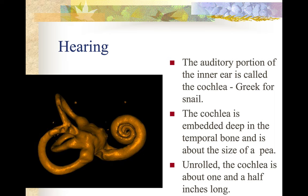The cochlea is embedded deep in the temporal bone and is about the size of a pea. This is one of the reasons you can hear vibrations — and why your voice sounds one way to you but different when you hear a recording. You're hearing the vibrations through the cochlea, getting vibrations from your skull, so it sounds different to you than it actually sounds to everybody else.